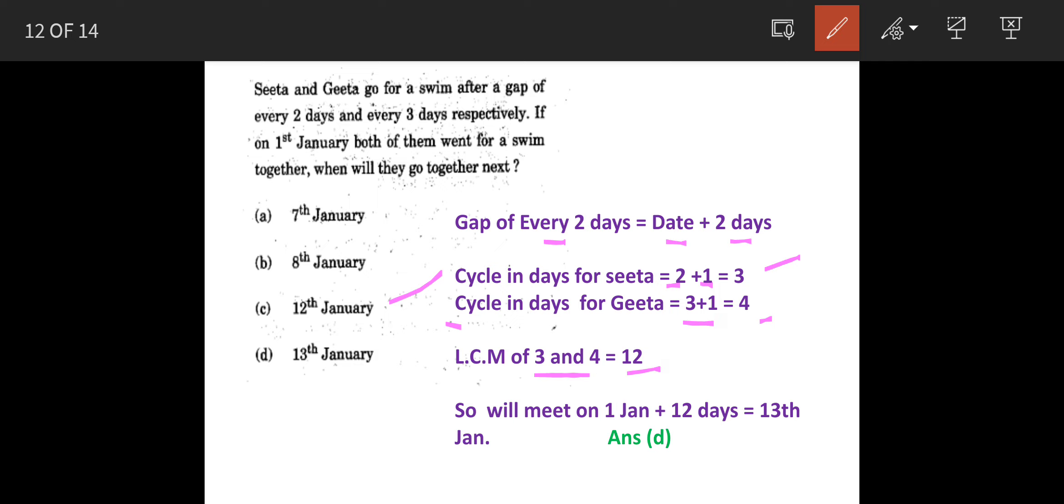So that means the next time they are going to swim together will be first January plus 12, which is 13th January. The answer is option D.